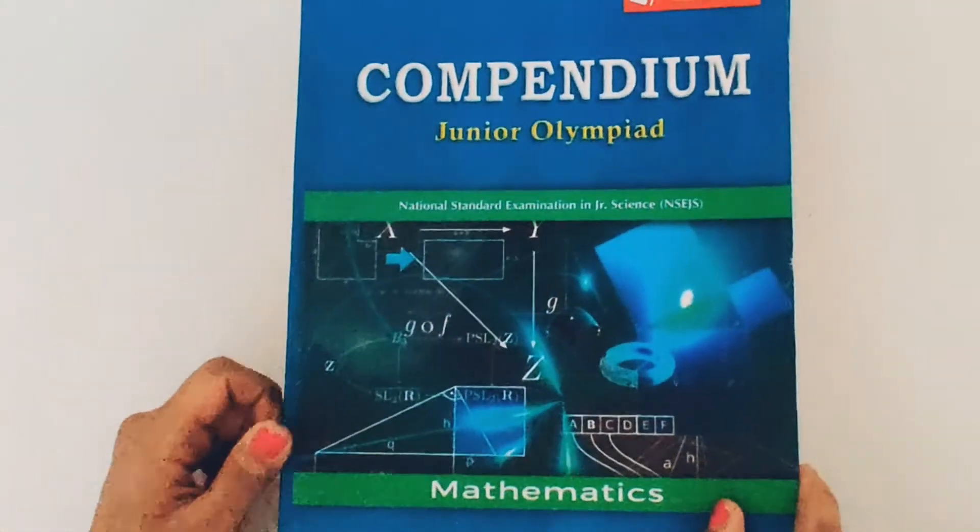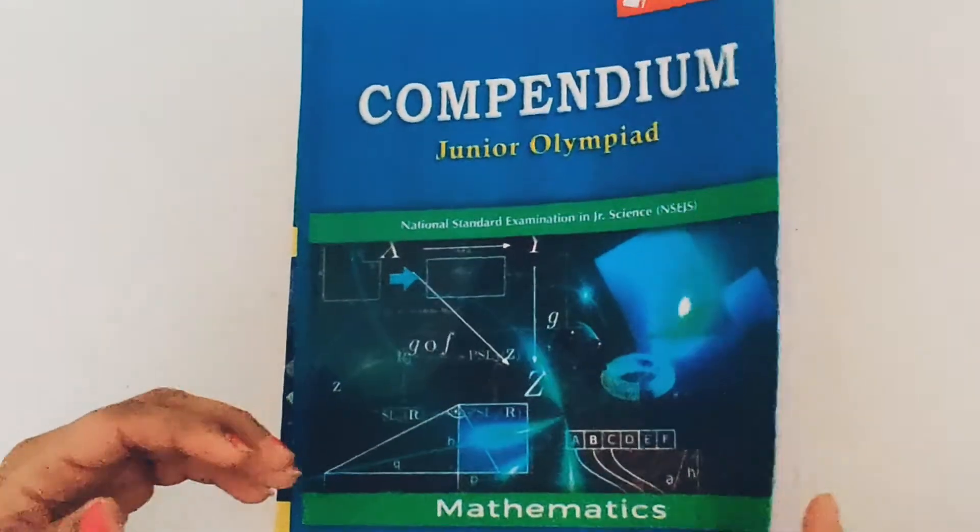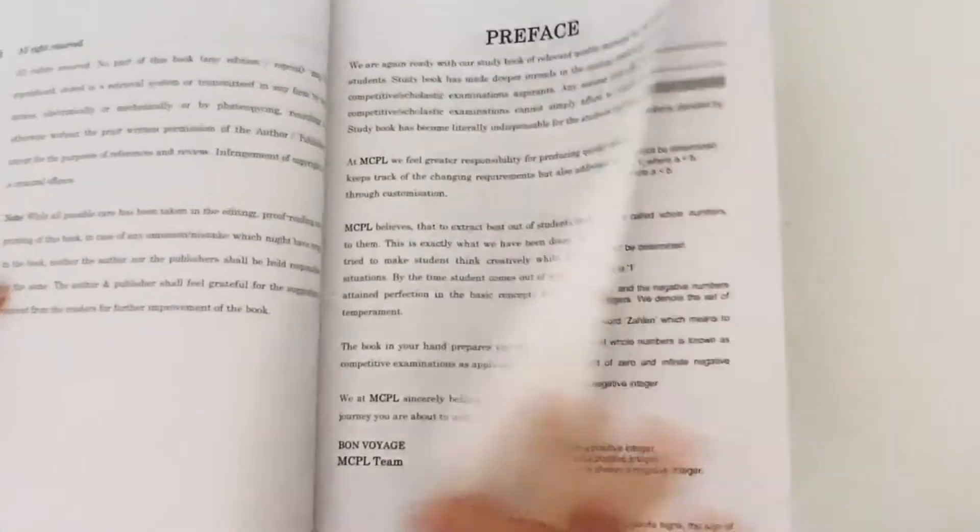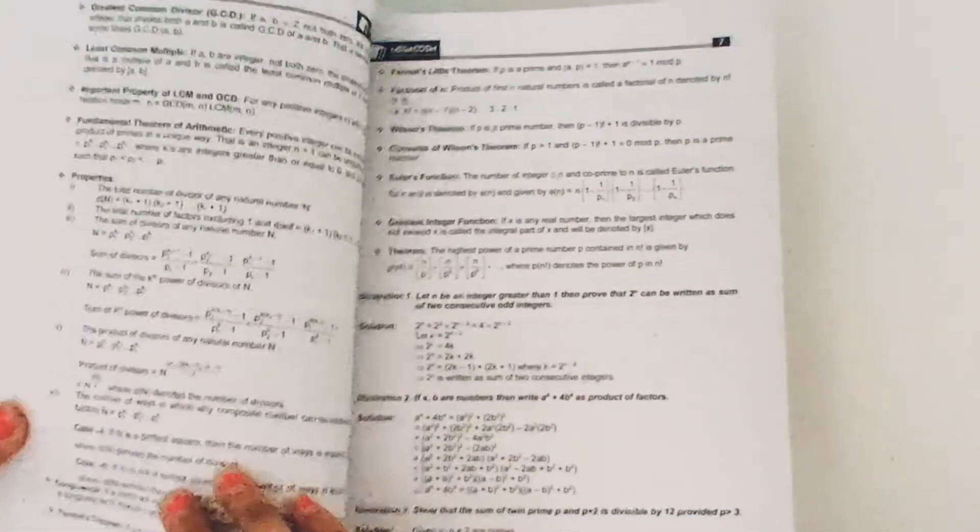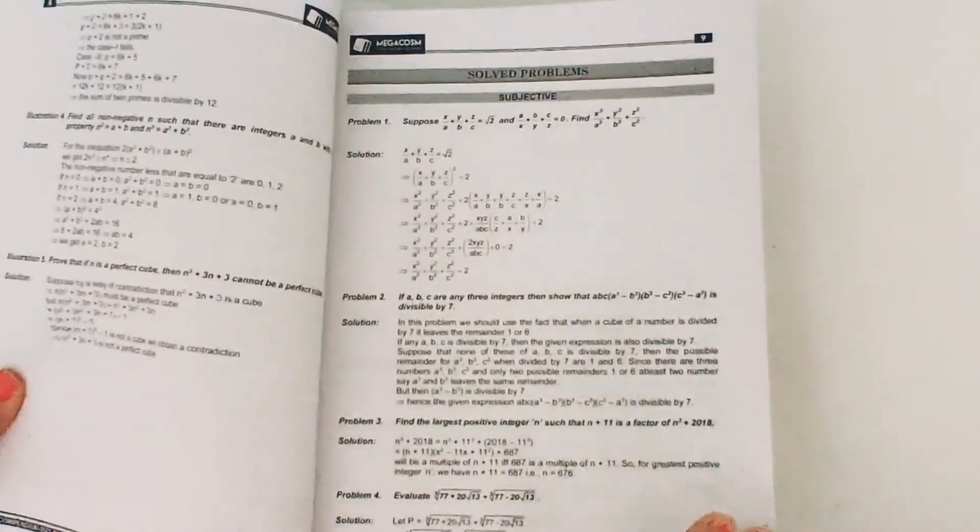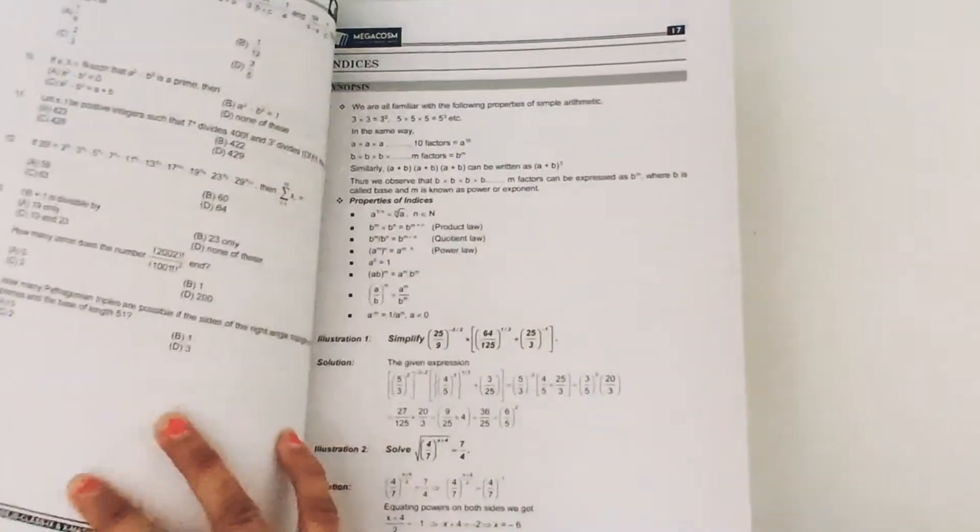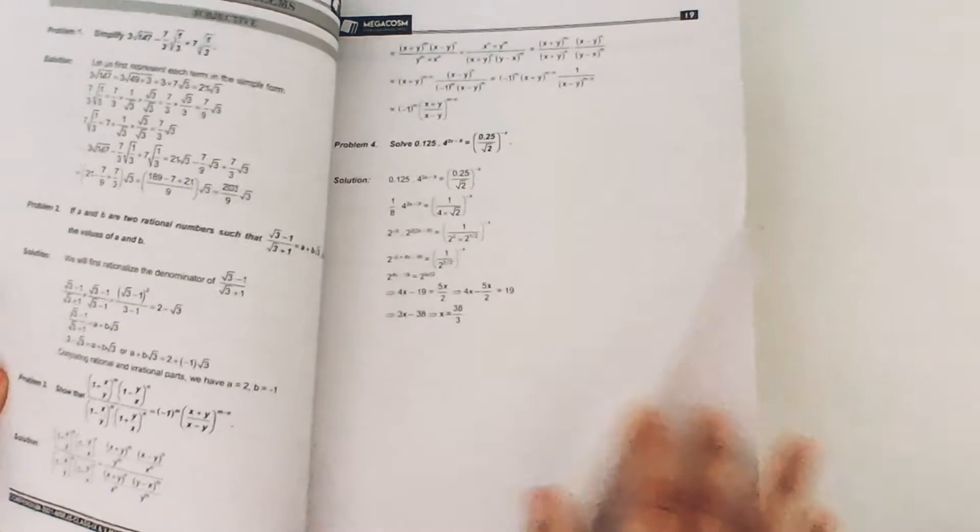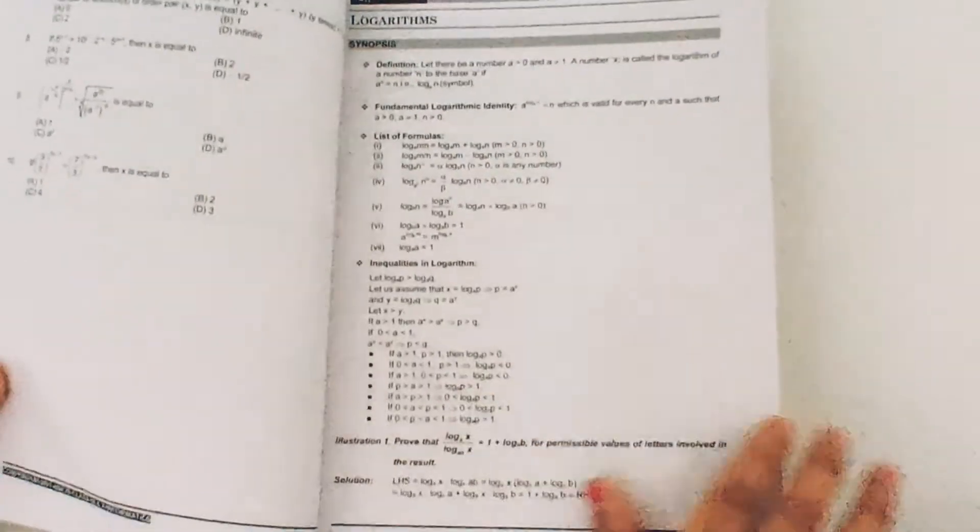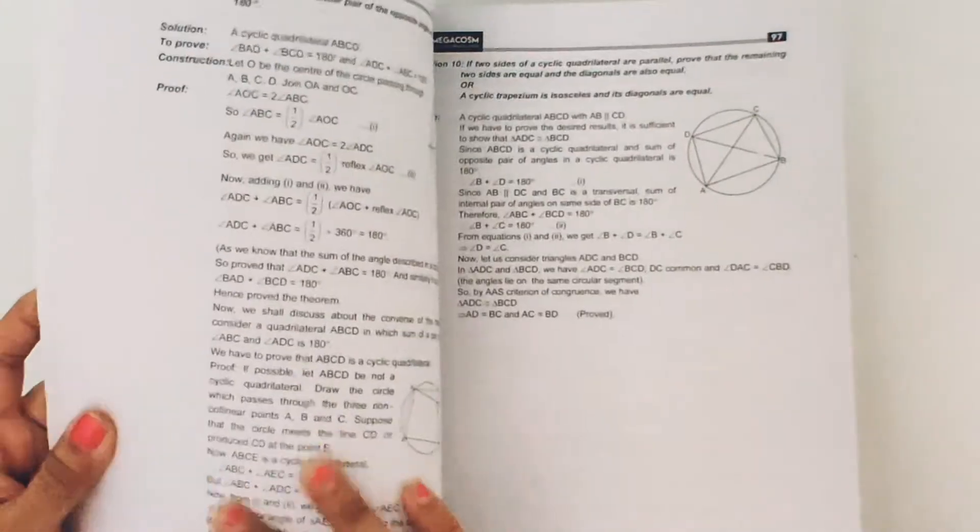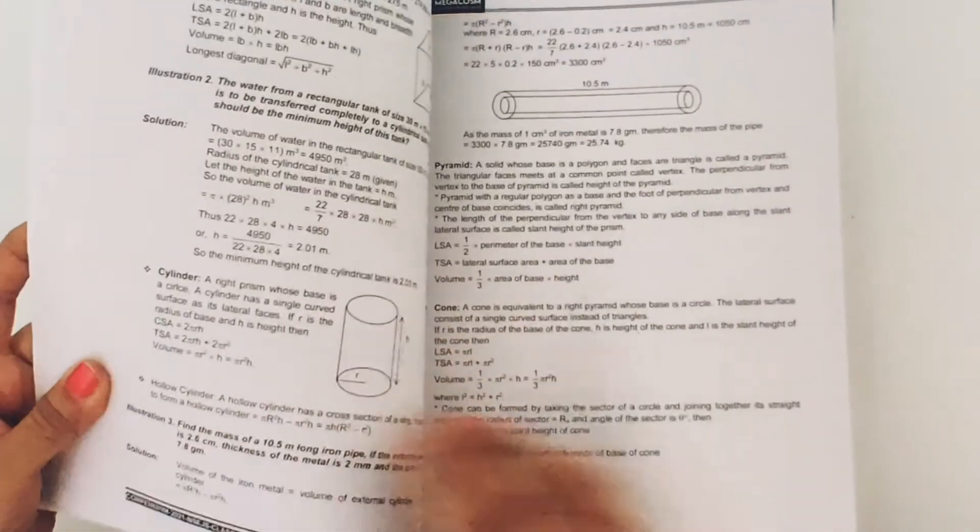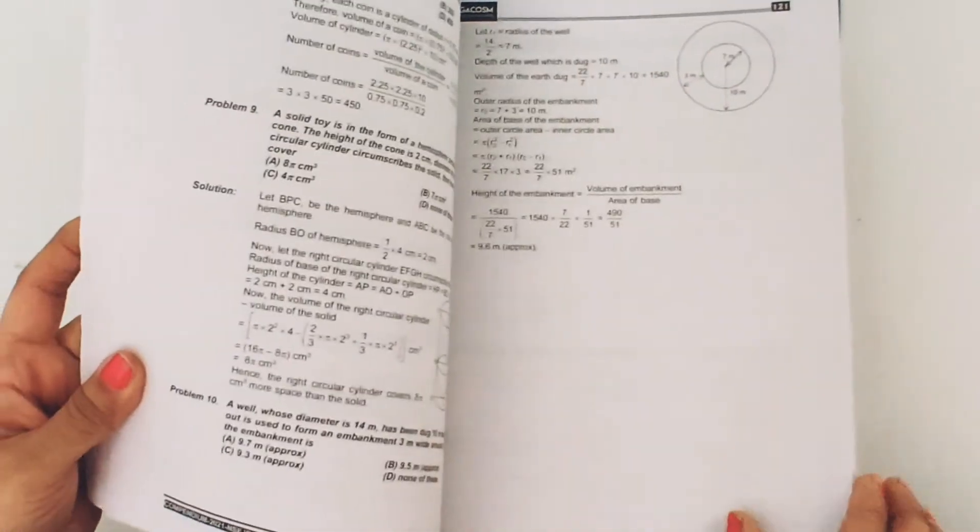This is the fifth compendium for NSEJS mathematics section. This book is also very good and contains first some synopsis for every chapter and then solved problems. The level is really very nice and it is also helpful for PRMO studies because the question difficulty level is really good. So you can practice more and more from this book for your concept clarity for each topic.